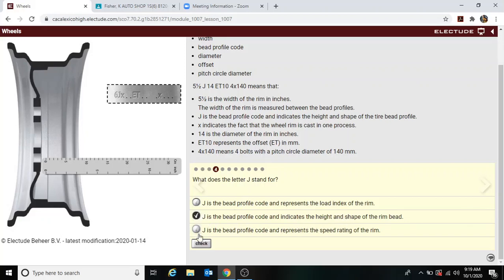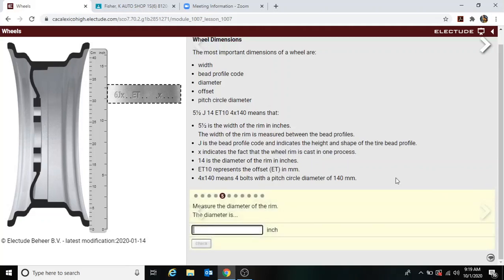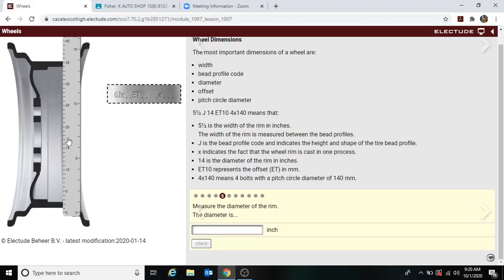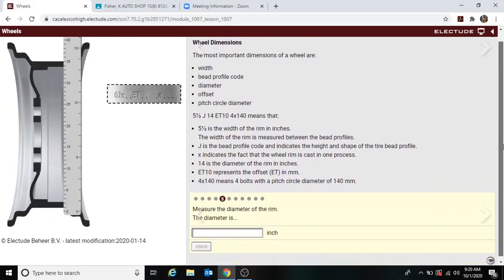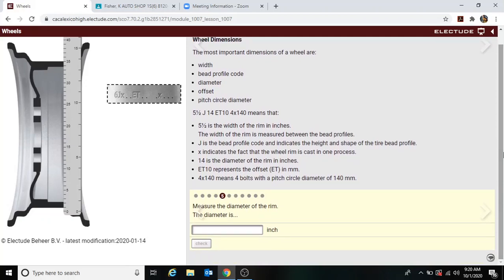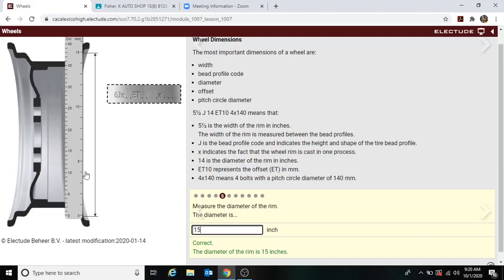That's this middle one right here. Measure the diameter of the rim. Okay, so in inches again, so we got to put inches here. Remember it's somewhere about this area, give or take. Set it about right, about right there, go about right there.